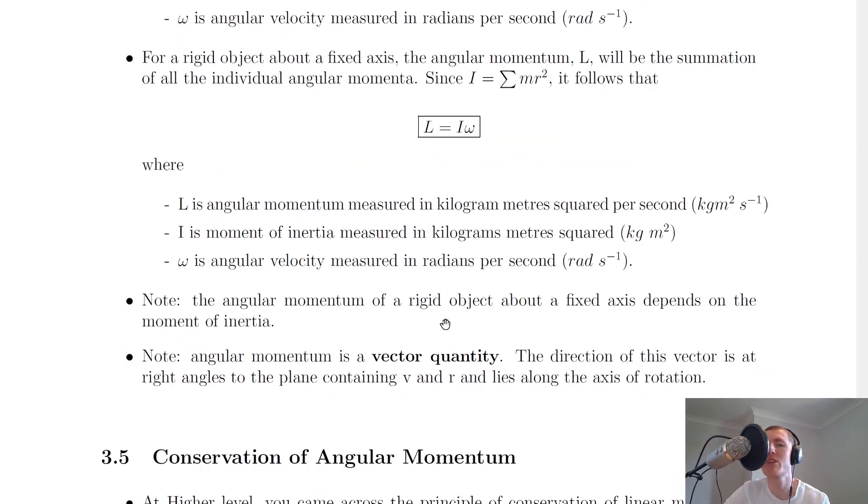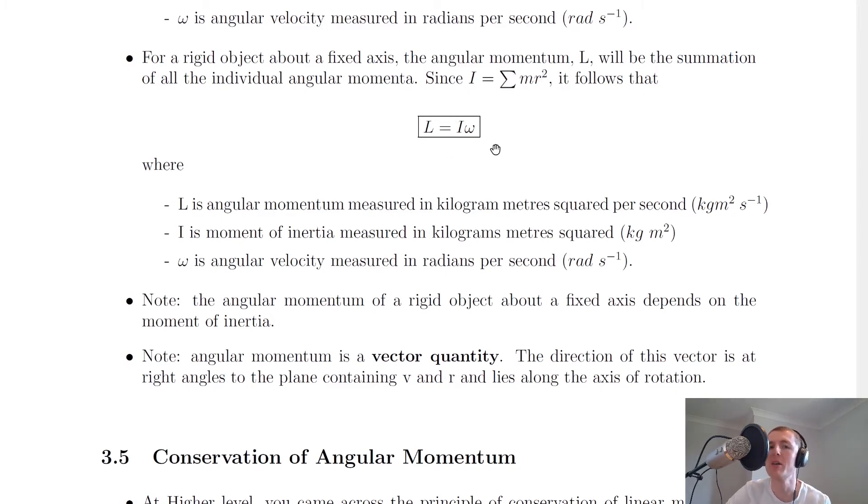We've then got an expression for considering a rigid object. So for a rigid object about a fixed axis, so one that's going to stay where it is, the angular momentum L will be the summation of all the individual angular momentum, just like we saw was the case for moment of inertia. And since I equals the sum of mr squared, it follows that L equals I omega.